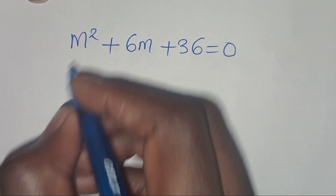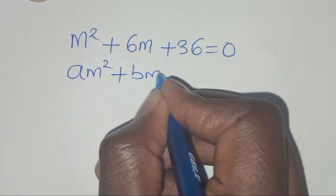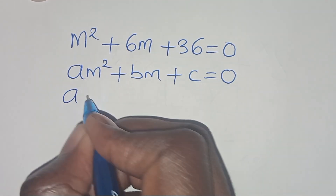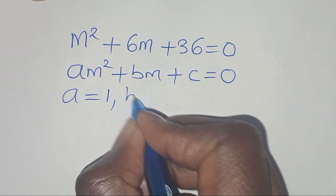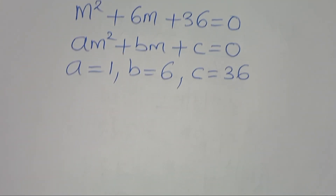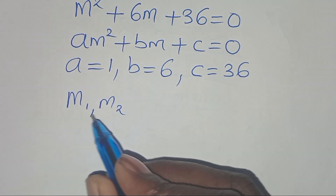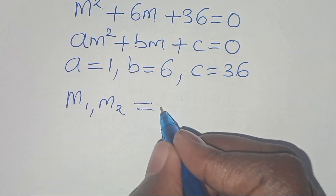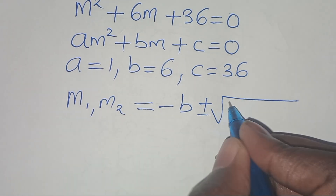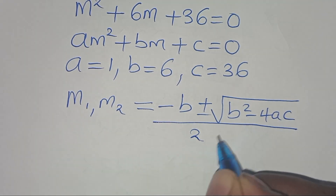The second part is a quadratic equation of the form am squared plus bm plus c equals 0. From this quadratic equation, a is equal to 1, b is equal to 6, and c is equal to 36. So we can apply the quadratic formula to solve for m1 and m2, which is minus b plus or minus the square root of b squared minus 4ac, over 2a.